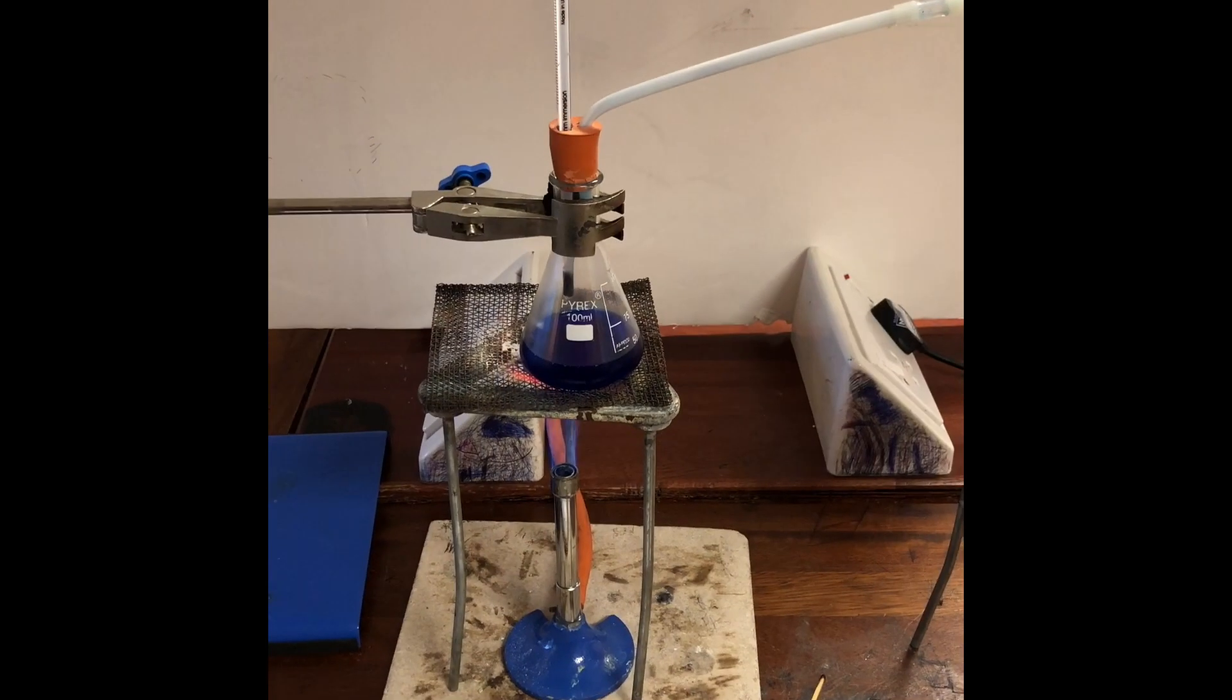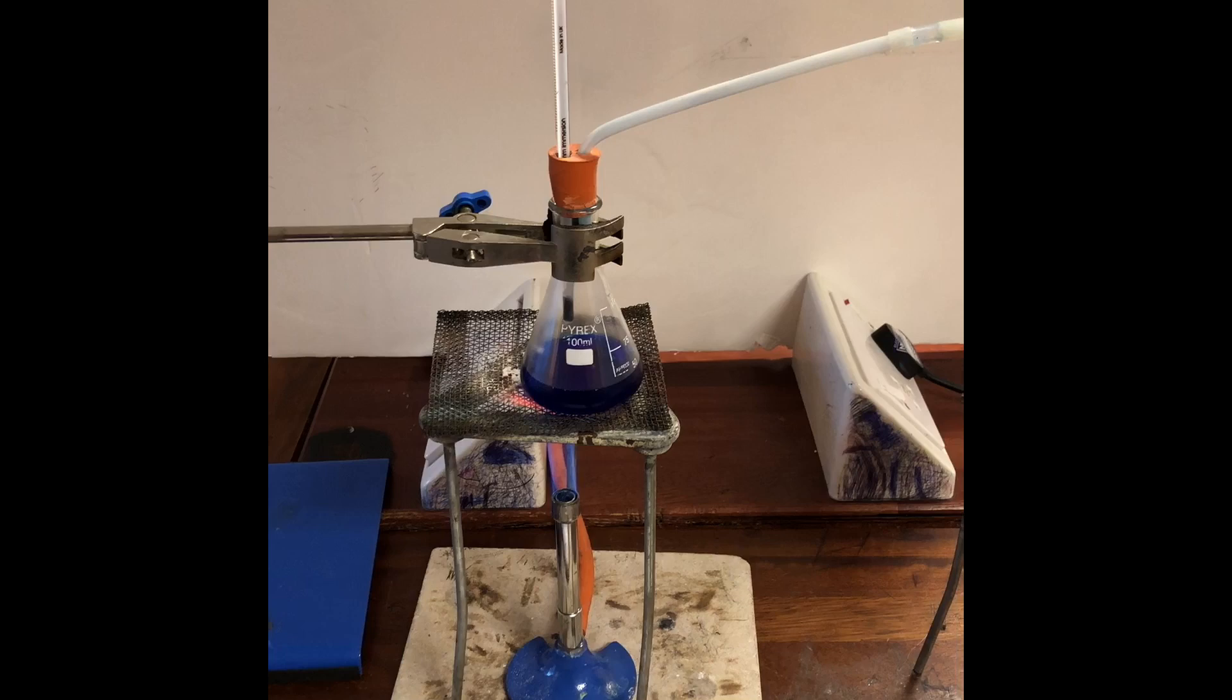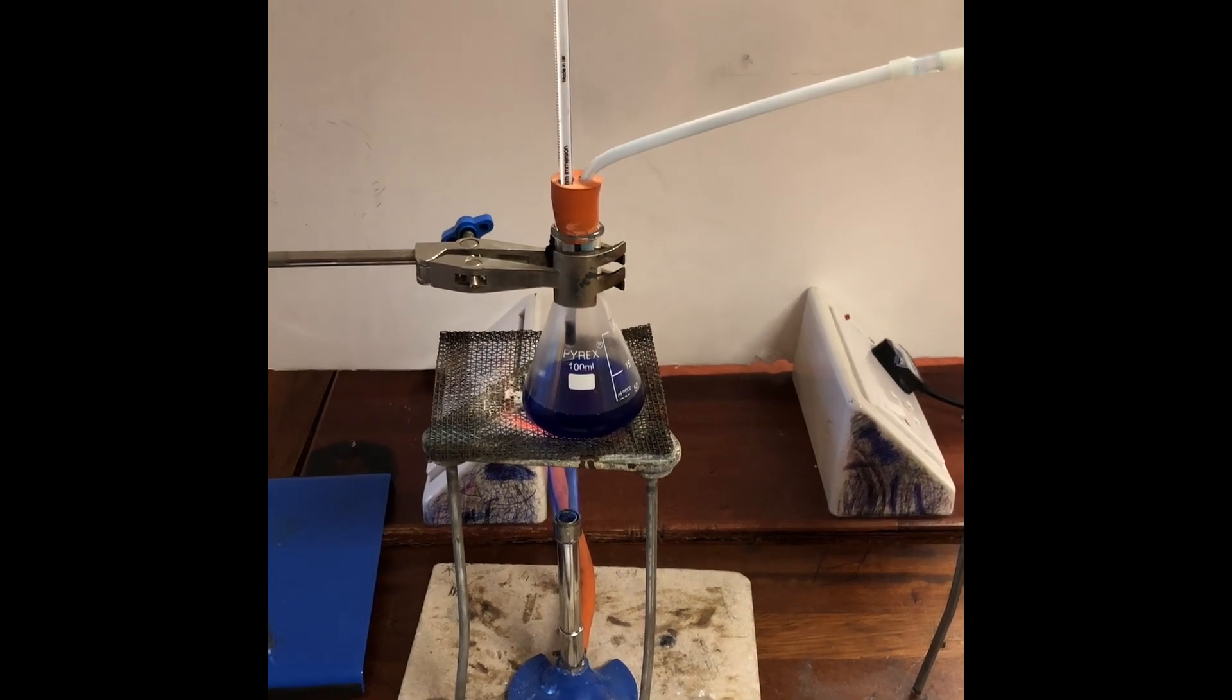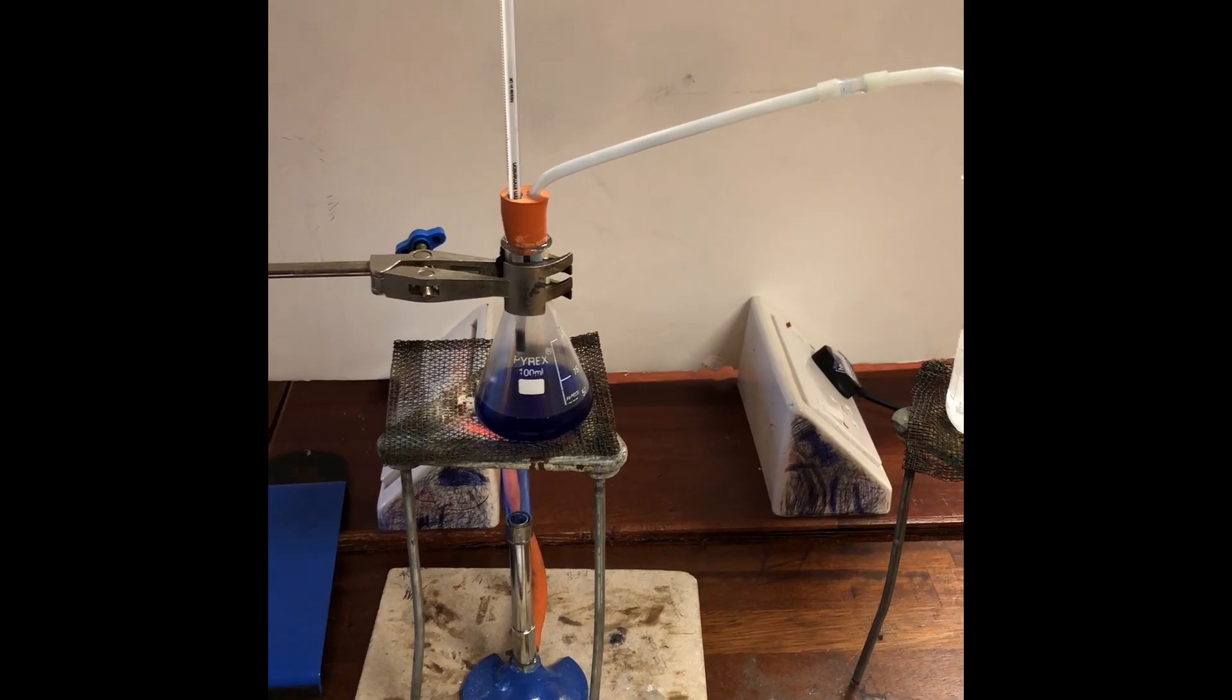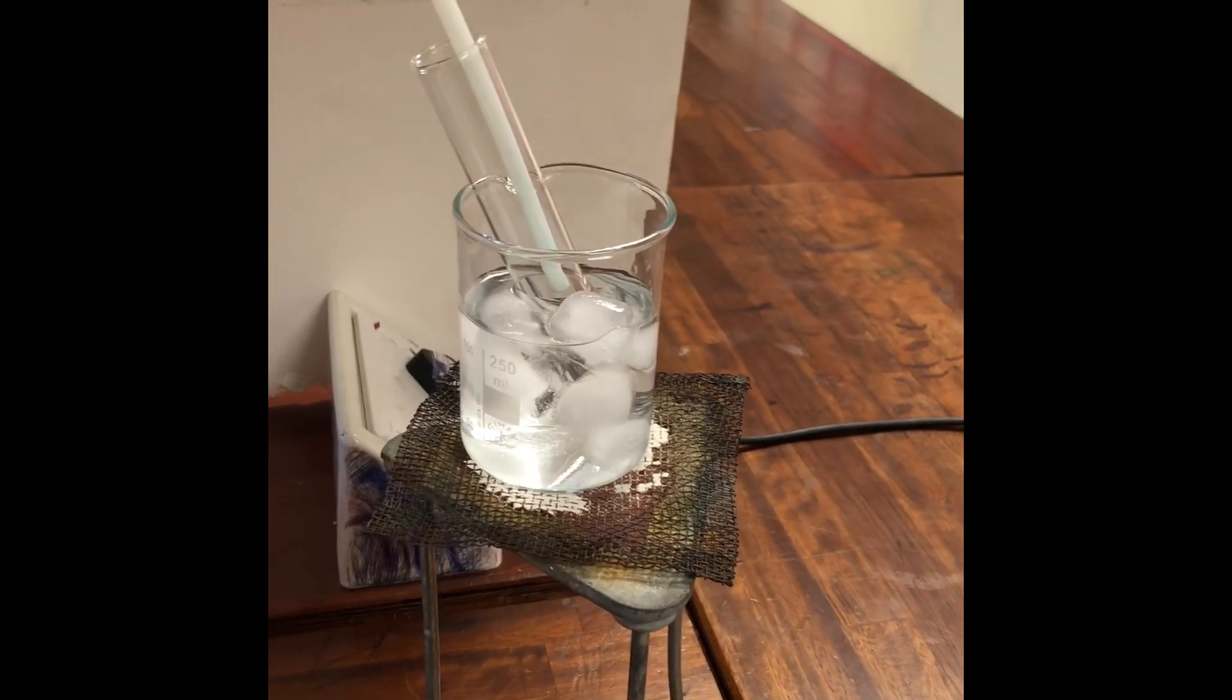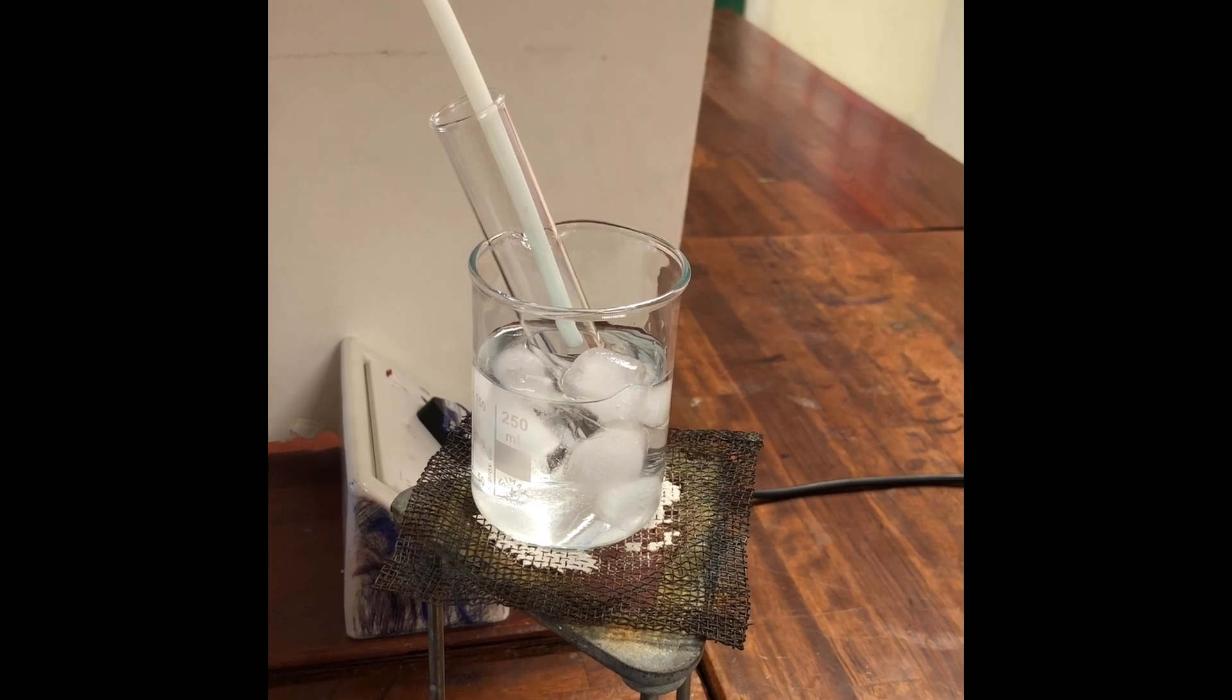So I've set the experiment up. You can see I've got a blue flame on my Bunsen burner, and the purpose of that is we don't want it to boil too quickly, otherwise the ink and the water will come through. And we're just going to leave that and watch this iced water to see what happens.